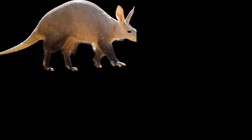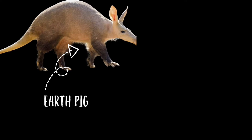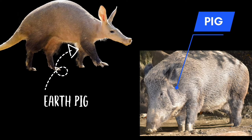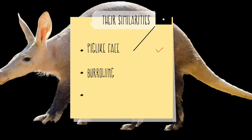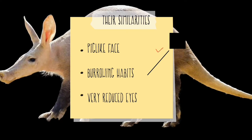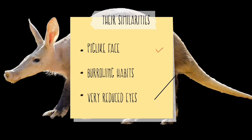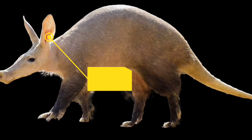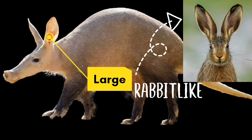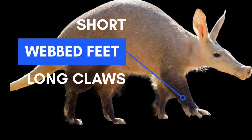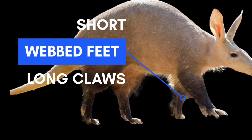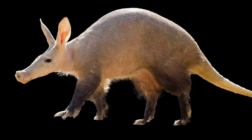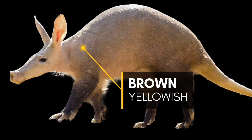Aardvark is derived from the Afrikaans word for earth pig, as they somewhat resemble a pig. Their similarities include a pig-like face, pawing habits, and very reduced eyes. Aardvark ears are large and rabbit-like. Their legs are short and partially webbed with long claws. The skin color of Aardvark is brown to yellowish.